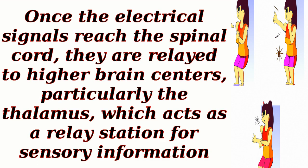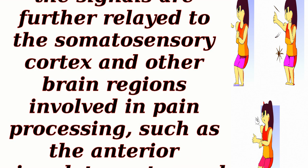Once the electrical signals reach the spinal cord, they are relayed to higher brain centers, particularly the thalamus, which acts as a relay station for sensory information. From the thalamus, the signals are further relayed to the somatosensory cortex and other brain regions involved in pain processing, such as the anterior cingulate cortex and the insula.